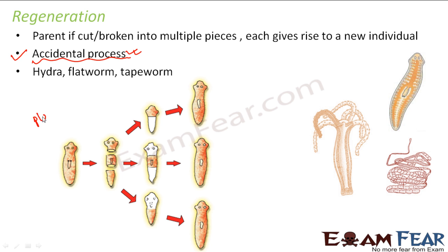Let's look at how regeneration happens using the example of planaria, which is a flatworm. If somebody cuts planaria into three parts, each of those pieces will gradually grow the other parts as well, because each part is made up of specialized cells capable of developing into different body parts. The middle part can form the head and tail, the tail can form the head and neck, and the head can form the middle part and tail. At the end of the process we get three new planarias.